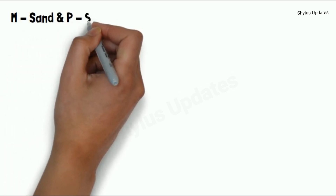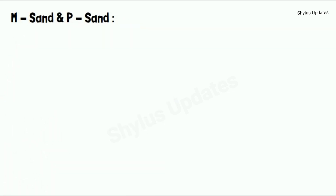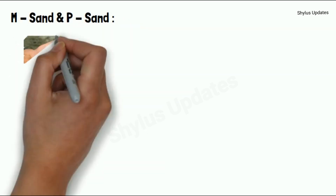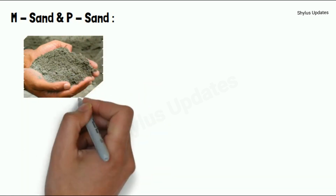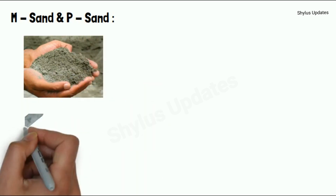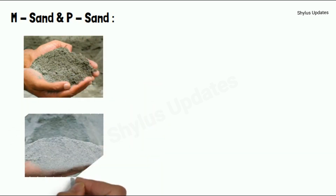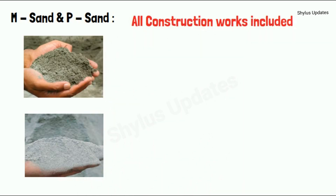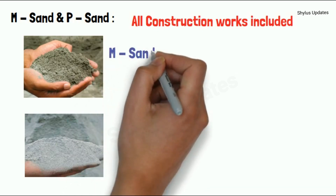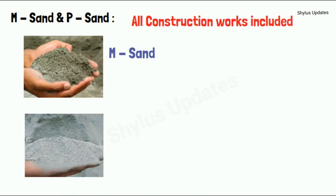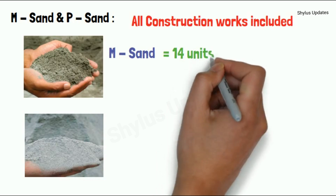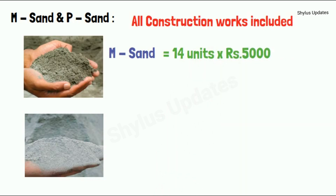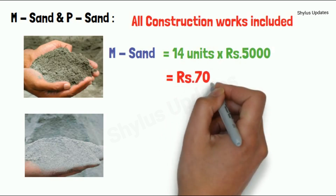M-Sand and P-Sand are used in all construction works. For a 700 square feet house, 14 units of M-Sand is required. The current market rate of M-Sand is Rs. 5,000 per unit. When you multiply 14 units into Rs. 5,000, you get Rs. 70,000.